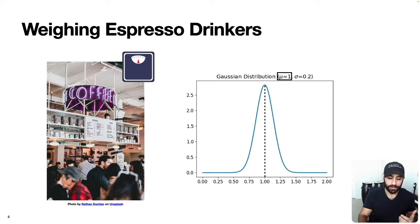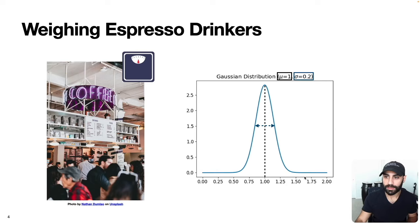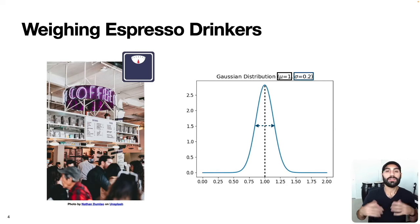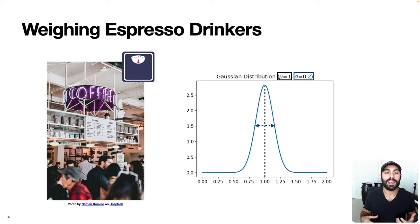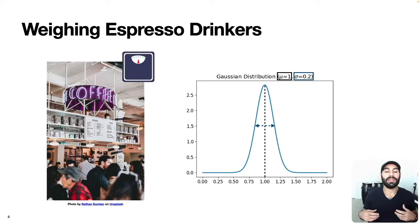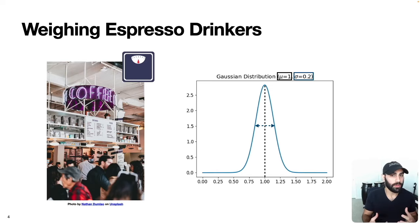The great thing about data that follows a Gaussian distribution is that we can capture a lot of the essential information with just a single number — the mean. You can go even further and capture how spread out the distribution is via measures like the standard deviation. These concepts — the Gaussian, the mean, standard deviation, variance — are all things people learn in an introductory or business statistics course, and indeed they are powerful techniques for analyzing data, solving problems, and making decisions.